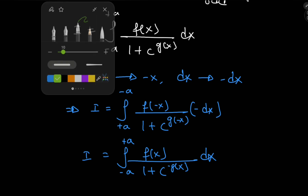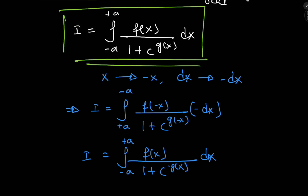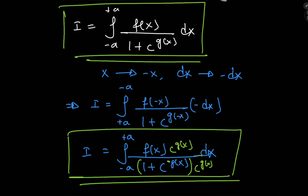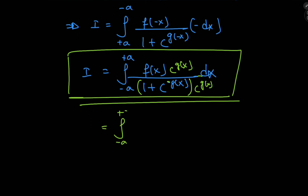So we have two structures for the integral I. They look identical except the one in blue has negative g of x as the exponent of c. To turn this integral in blue into another structure with the same denominator, I should expand using c to the g of x — multiplying upstairs and downstairs — giving the integral from negative a to positive a of c to the g of x times f of x divided by 1 plus c to the g of x dx.